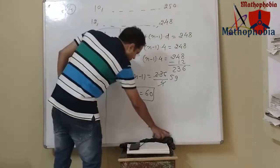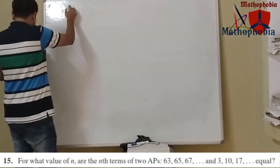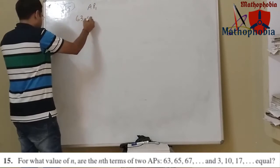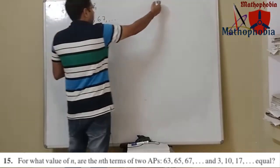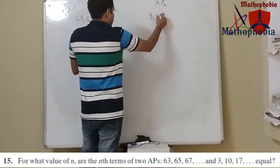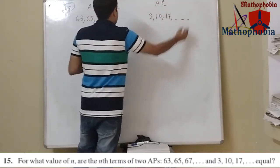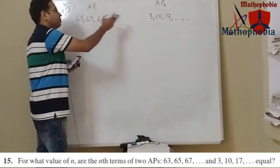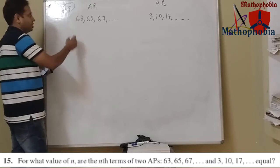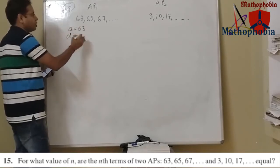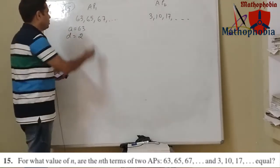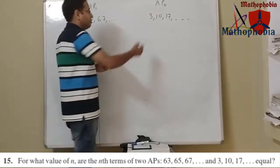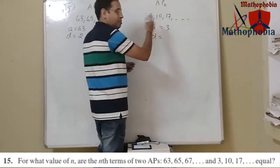Let's move on to question number 15. Two APs are given: AP1 is 63, 65, 67... and AP2 is 3, 10, 17... We need to find for what value of n the nth term of both APs are equal. For AP1, a = 63 and d = 65 - 63 = 2. For AP2, a = 3 and d = 10 - 3 = 7.